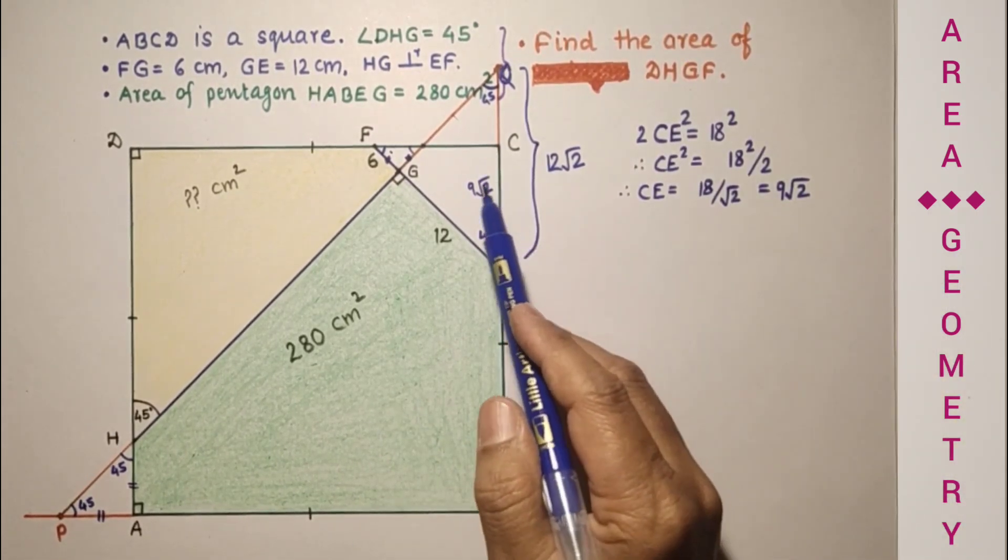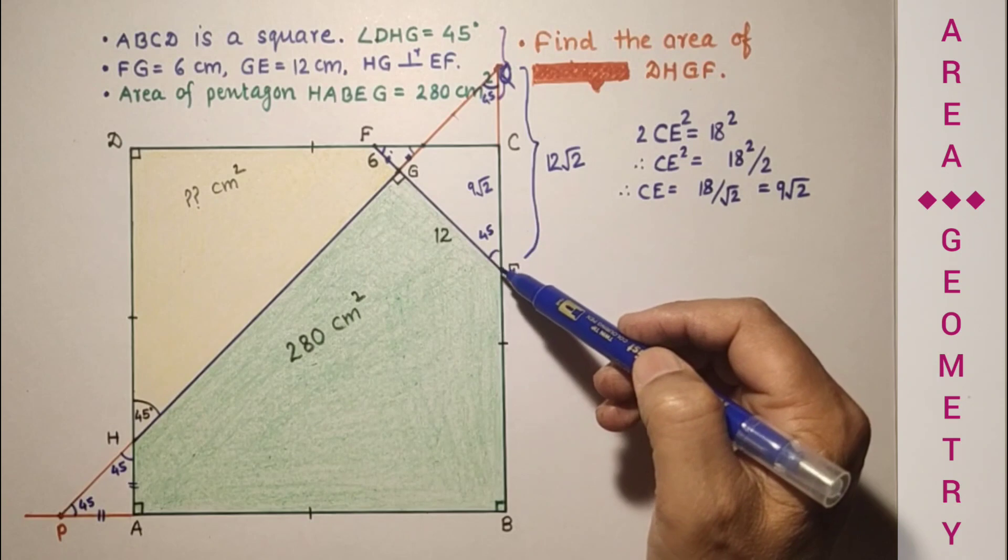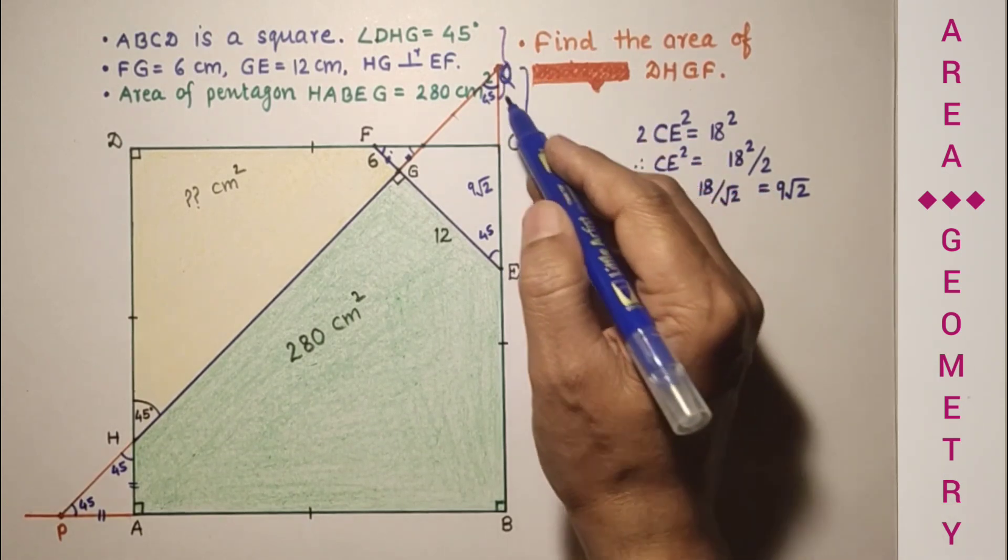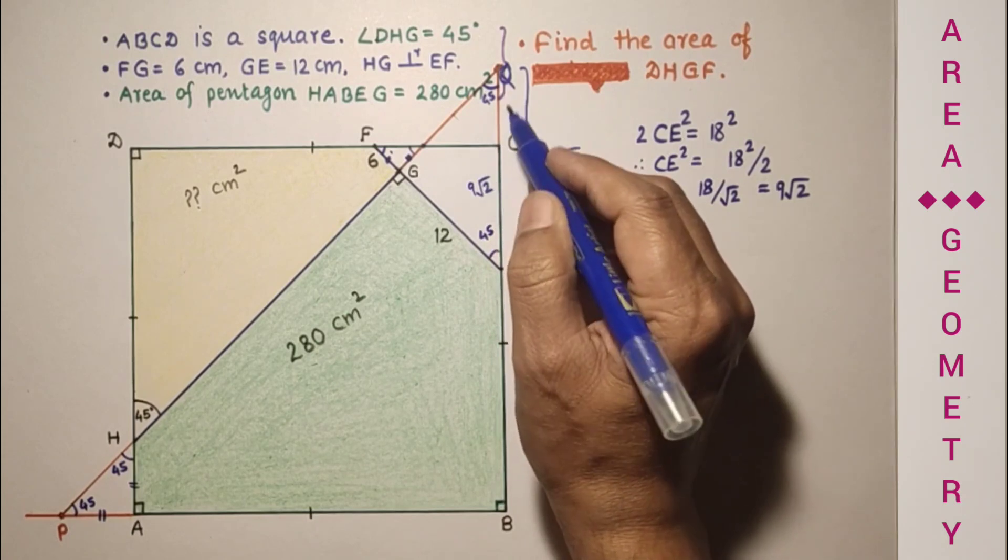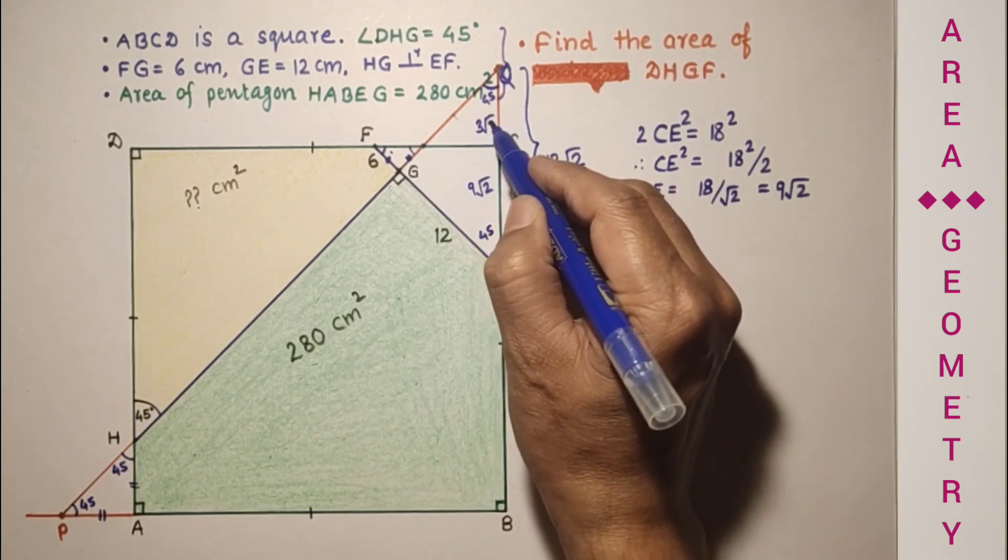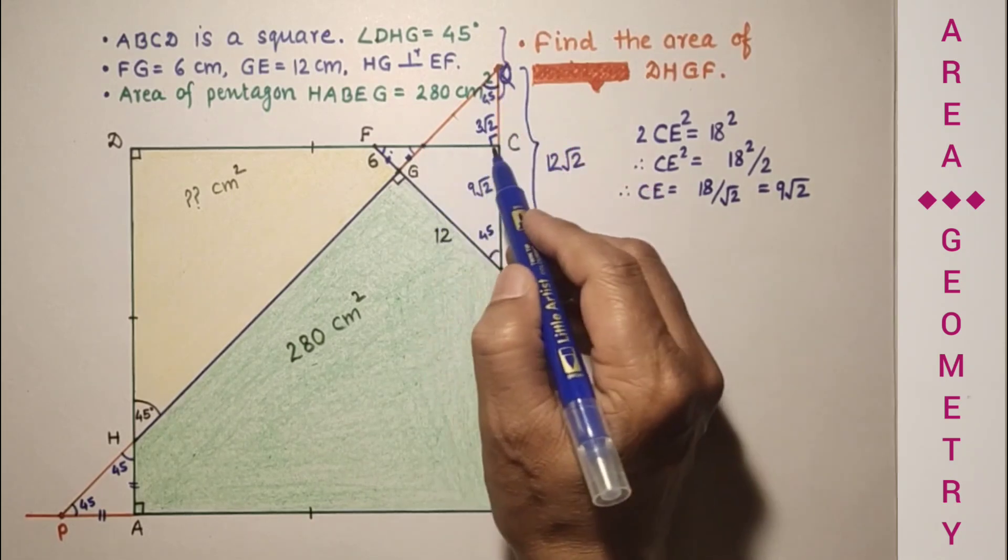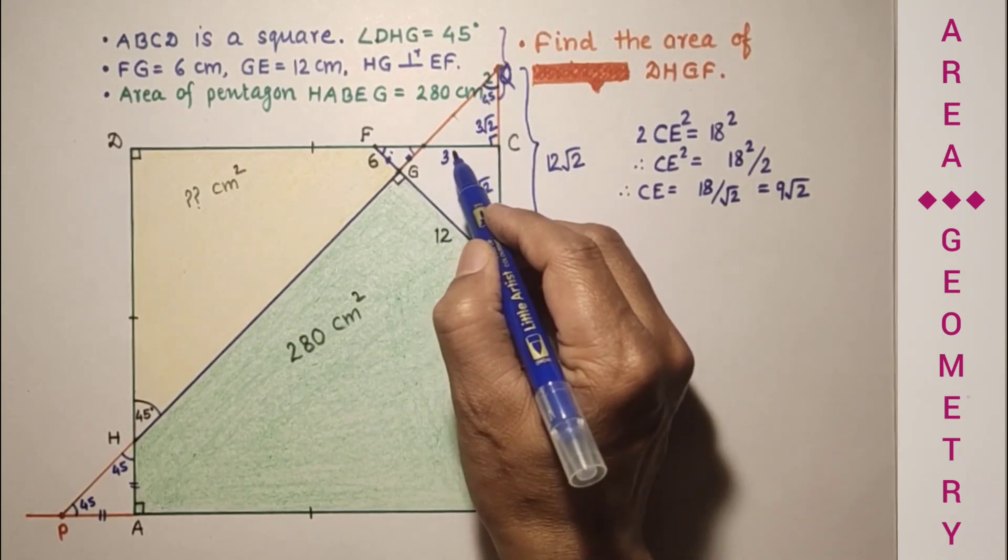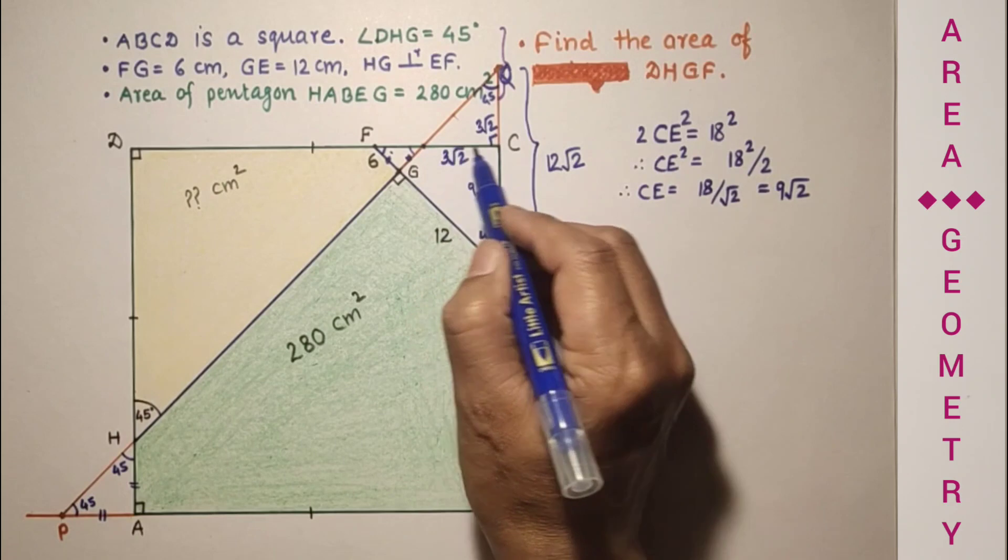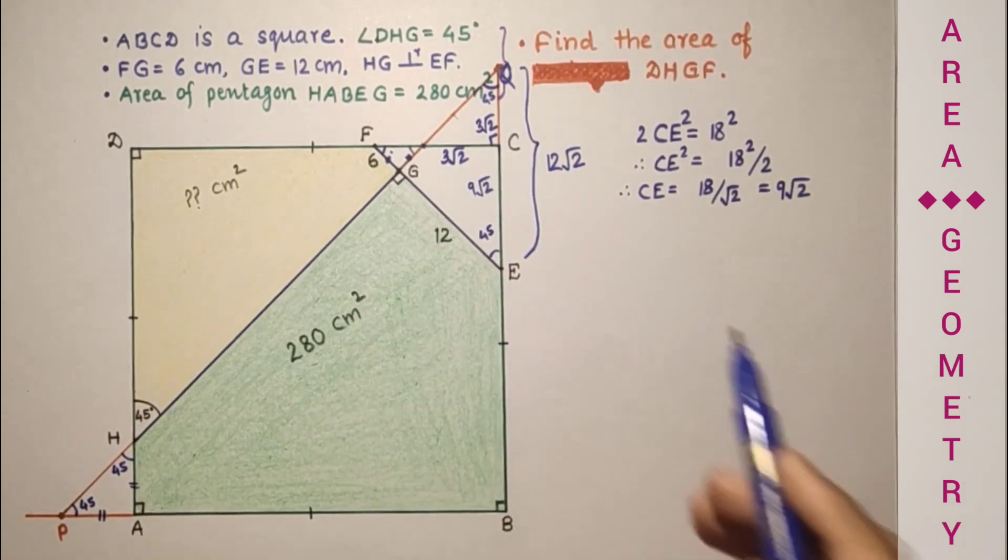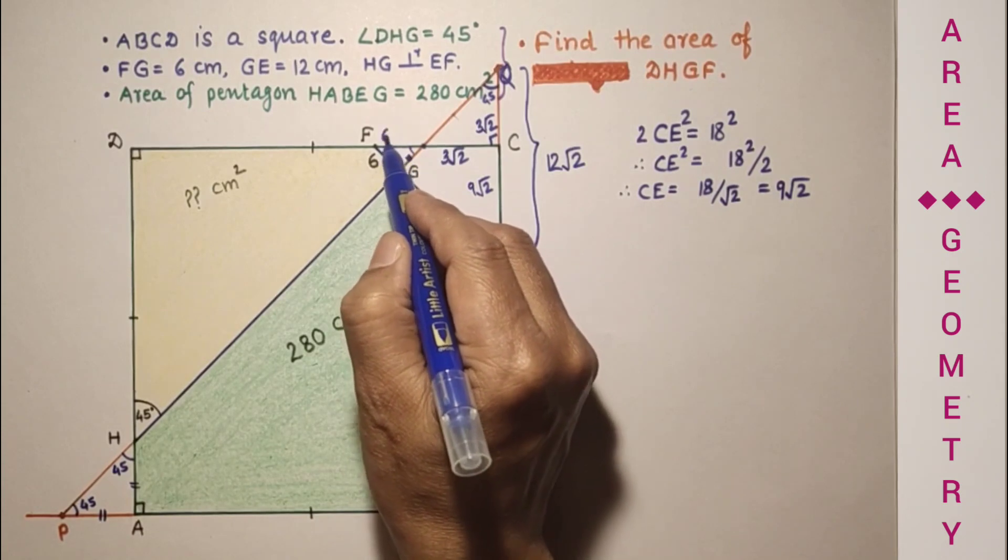FC and CE are both equal since 45, 45. So 2 CE square is 18 square. Therefore CE is equal to 9 root 2. And the whole EQ is equal to 12 root 2. So this QC is equal to 3 root 2, because 9 root 2 plus 3 root 2 is 12 root 2. This is 90, this is 45, so this will also be 3 root 2. This is 3 root 2, and this is 6 root 2.